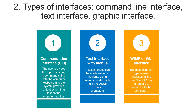The next topic is about types of interfaces. They are divided into three: the first one is the command line interface, or CLI for short; the next is the text interface with menus; and the last one is the WIMP or GUI interface.